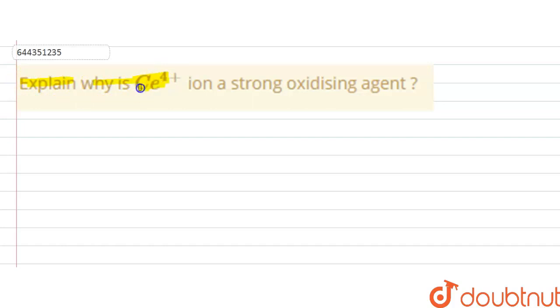So in this question we have to explain why cerium 4+ ion is a strong oxidizing agent. So first of all, what are oxidizing agents?